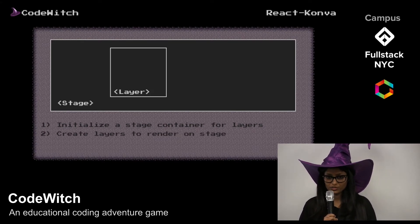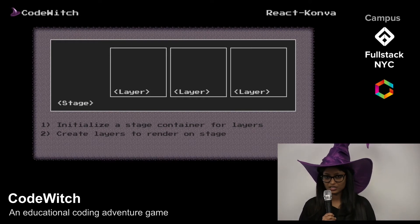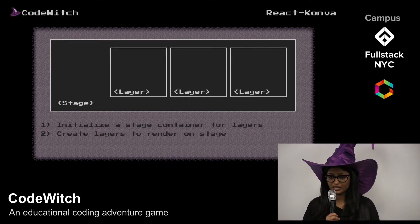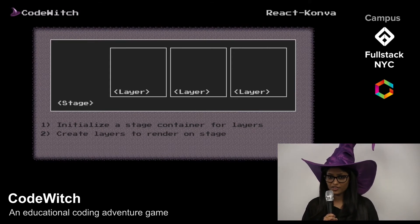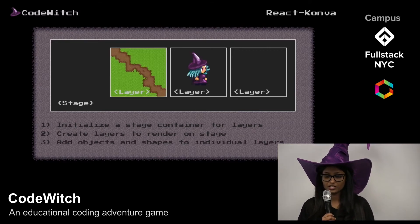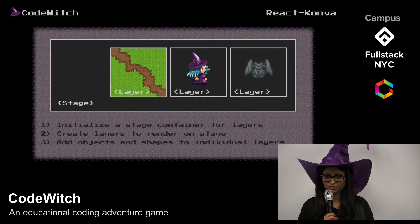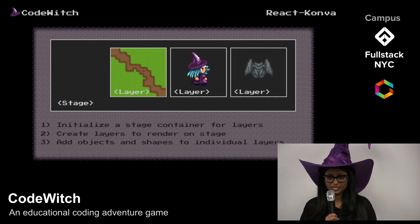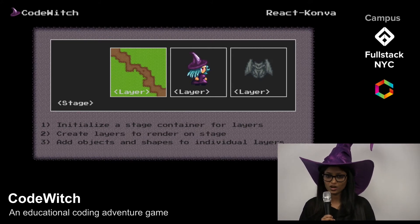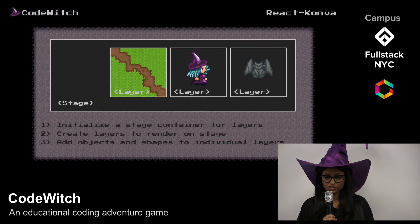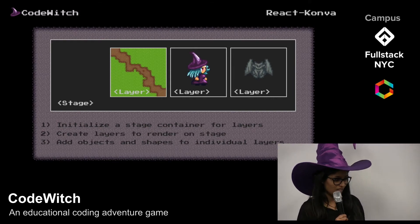We chose Canvas over other gaming libraries such as Phaser because our input is purely text and block-based. However, the Konva layering system made it very difficult to pass props down to child components because of its deep nesting. We were able to overcome this by using Redux. Now I will hand over to Xiao Wen, who is going to talk about Blockly.